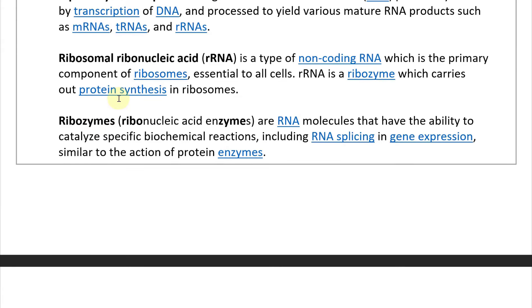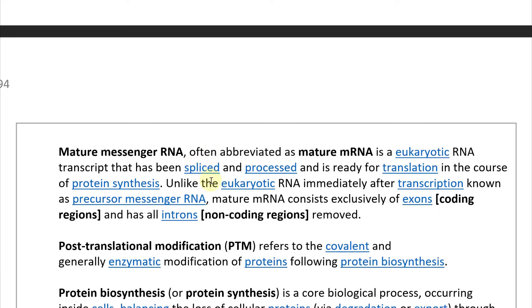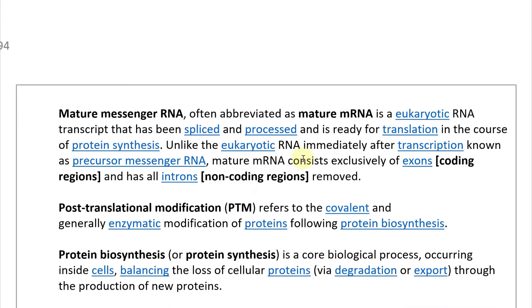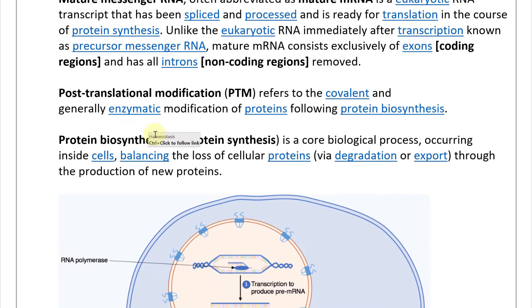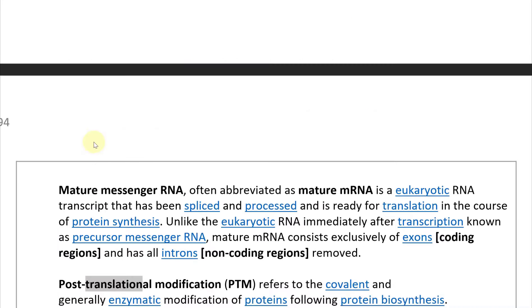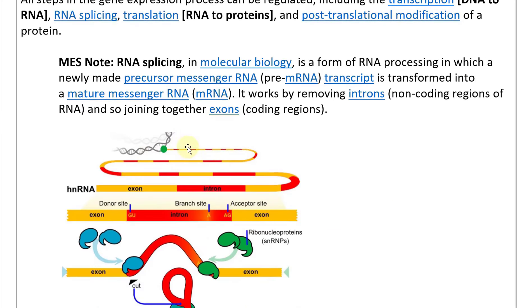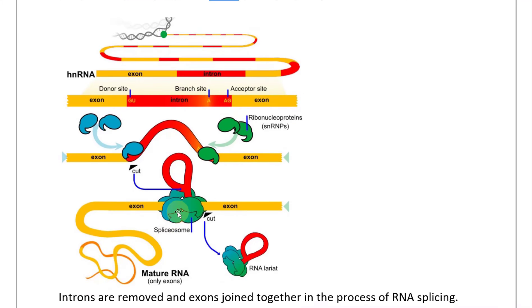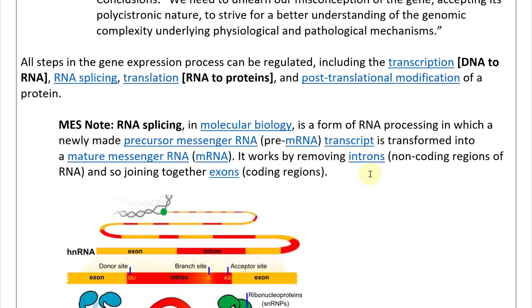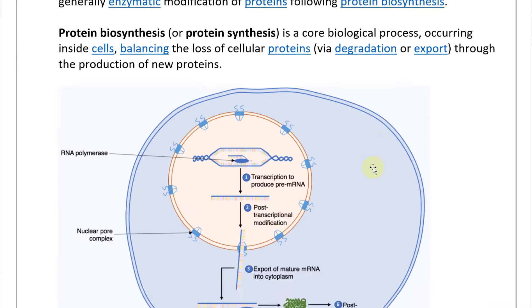Mature mRNA is a eukaryotic RNA transcript that has been spliced and processed and is ready for translation in protein synthesis. Unlike precursor mRNA, mature mRNA consists exclusively of exons (coding regions) with all introns (non-coding regions) removed. Here is a figure showing protein biosynthesis: starting with transcription and post-transcriptional modification in the nucleus, then the mature mRNA is exported to the cytoplasm through a nuclear pore complex, where it is translated by ribosomes with transfer RNA.